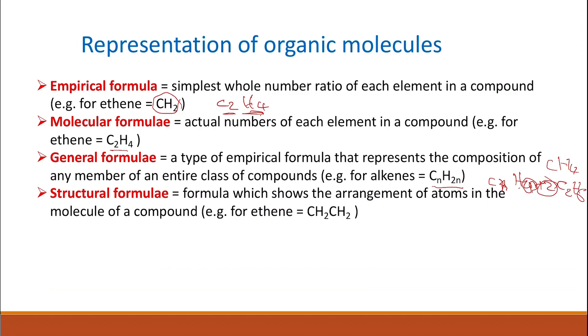Structural formula is a formula that shows the arrangement of the atoms in the molecule of a compound. For example, for ethene, which is one of the alkenes, it's CH2, CH2, which means there are carbon atoms attached to two hydrogen atoms, and then another carbon attached to two hydrogen atoms. It doesn't show whether there are single bonds or double bonds. It just shows the arrangements of the atoms.